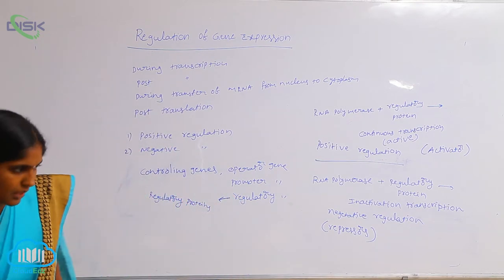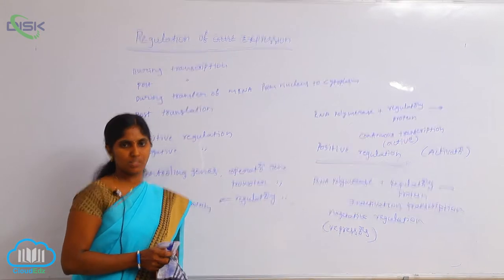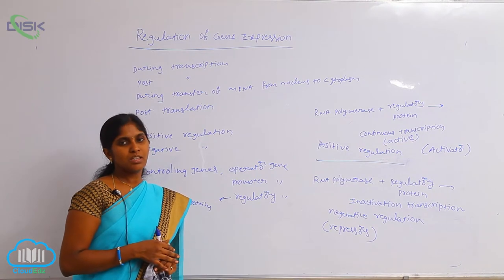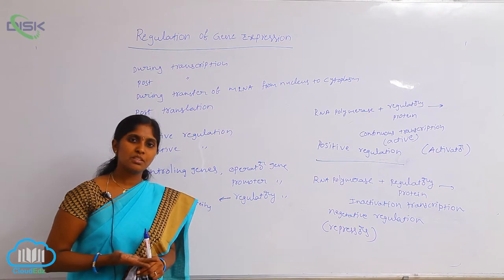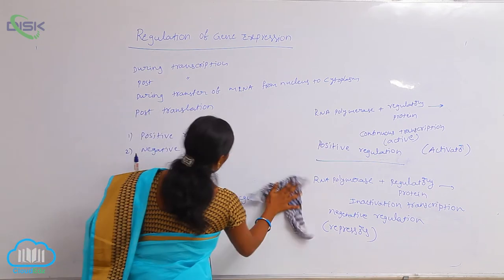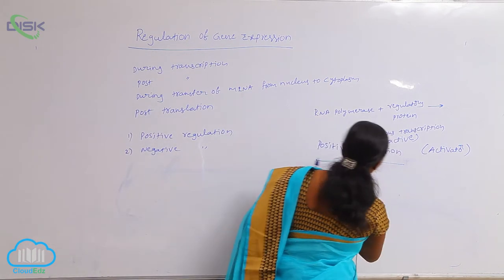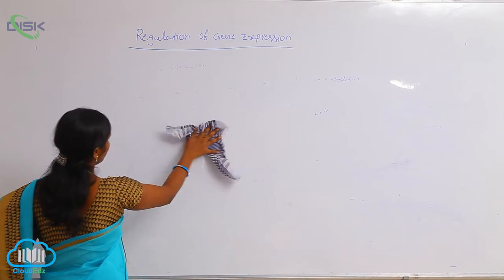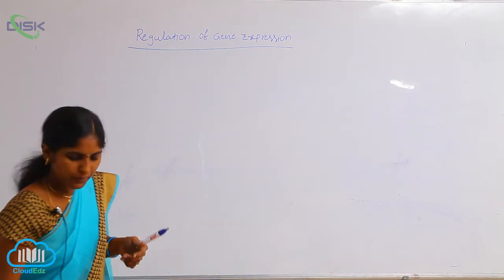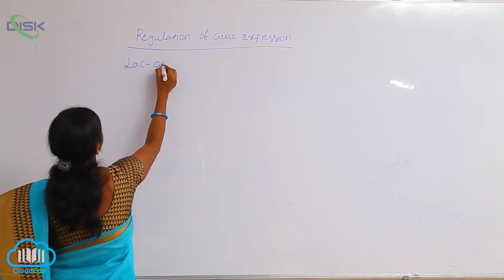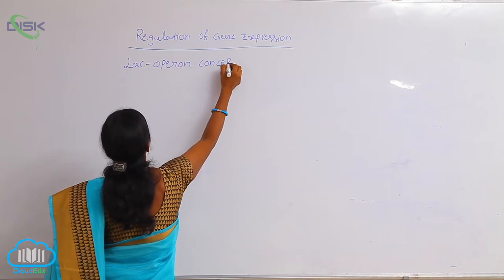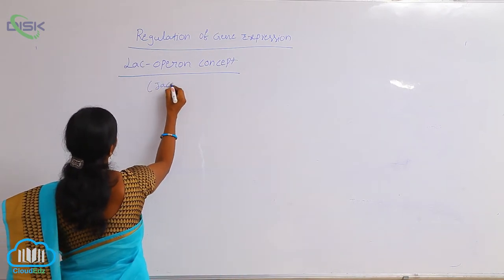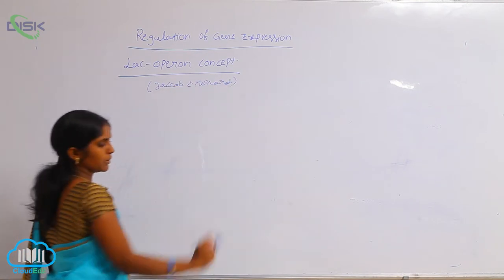In E. coli bacteria, lactose metabolism is the main source of energy. Lactose is metabolized — catalyzed into galactose and glucose — in the presence of the enzyme beta-galactosidase. The beta-galactosidase enzyme is regulated by negative regulation during transcription. This is explained in the form of the lac operon concept, postulated by scientists Jacob and Monod.